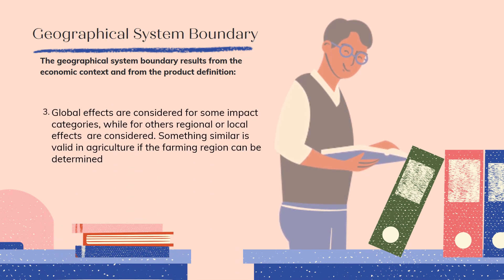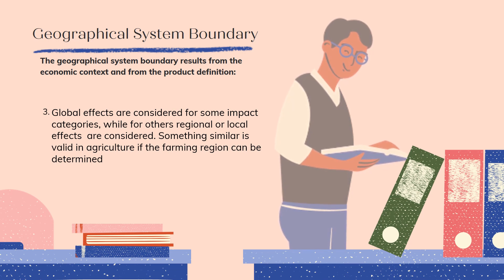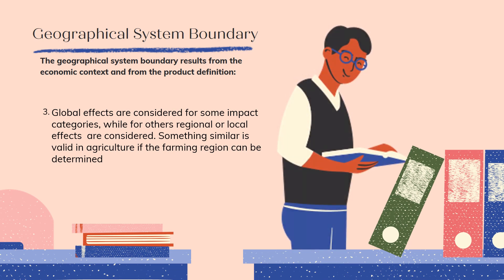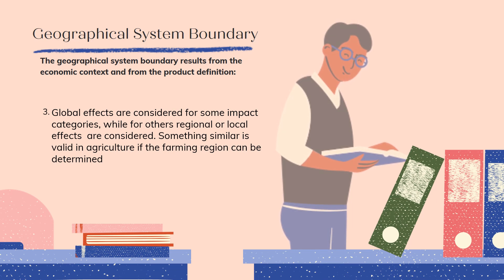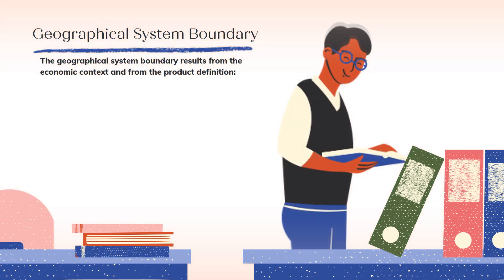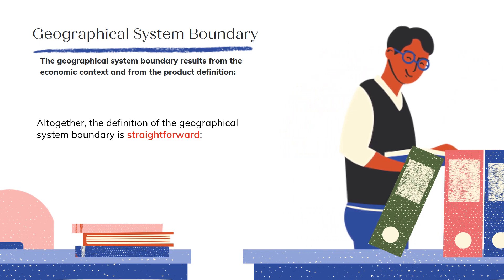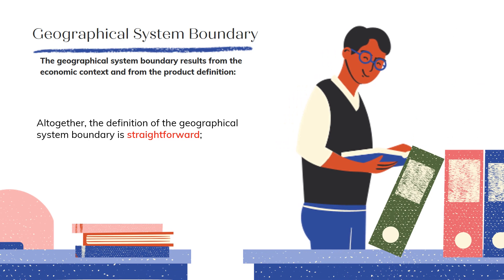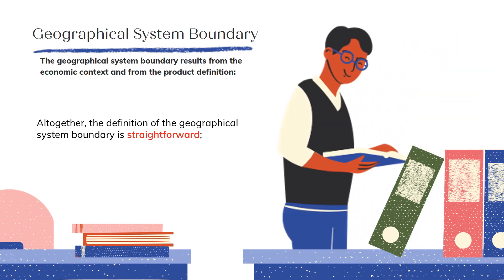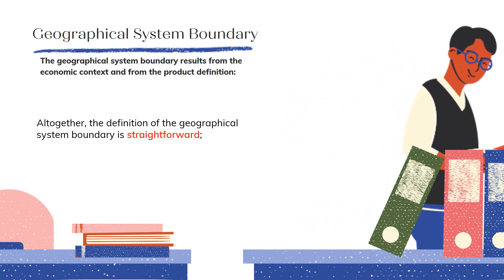Third, in LCIA, global effects are considered for some impact categories such as climate change, greenhouse effect, and stratospheric ozone depletion, while for others regional or local effects like eutrophication potential are considered. Local boundaries can, however, be clearly assigned only in rare cases — for instance, if a special product is manufactured in one factory only. In this case, at least one point in the lifecycle can unambiguously be assigned geographically. Something similar is valid in agriculture if the farming region can be determined. All together, the definition of the geographical system boundary is straightforward — it is a question of data availability. Commodities such as metals, mass plastics, chemicals of very large production volume, often do not reveal their origin. In these cases, a regional allocation of impacts is difficult, if not impossible.